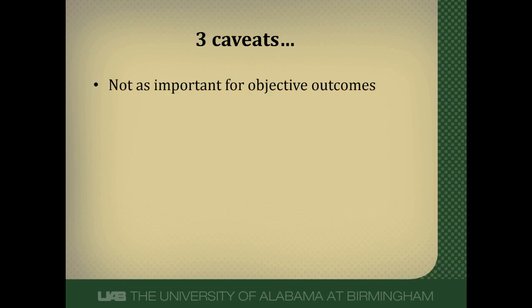There are a few additional things to consider. Blinding, while important, is not as critical for objective outcomes — things like death are objective, whereas cause of death is subjective. For objective outcomes, blinding isn't quite as important. Also, sometimes you can't blind people. In a surgical versus medical intervention study, for instance, patients can usually figure out which arm they're in.